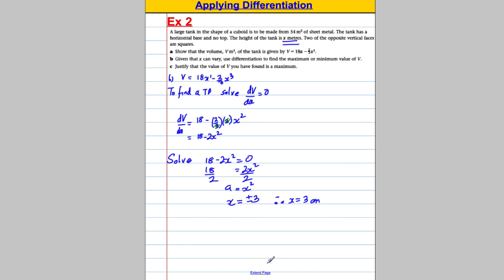So we found x, but they want us to find the maximum or minimum value of V. So we're nearly there. Therefore, V is equal to 18 multiplied by 3 subtract 2/3 times 3 cubed. And I think it gives us our volume. It's going to be equal to 36 centimetres cubed.